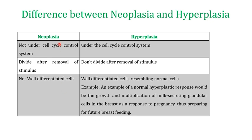In human beings, there are two types of excessive cell division: neoplasia and hyperplasia. Both involve excessive cell division, but neoplasia leads to the formation of tumors or cancer, while hyperplasia is actually required for normal functioning of the human body. One important difference is that neoplasia is not under the cell cycle control system, which ensures cell division only occurs to the required extent.